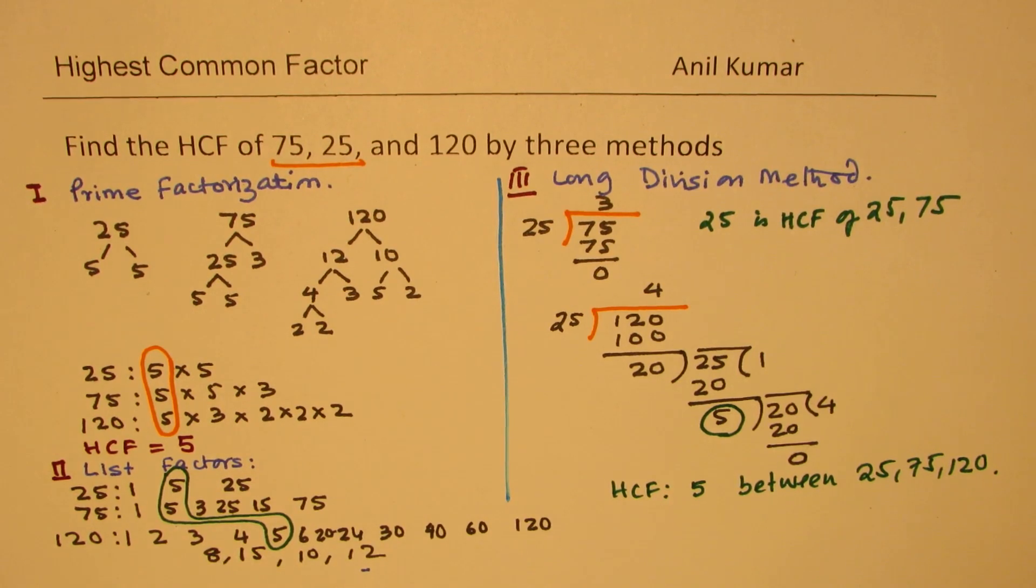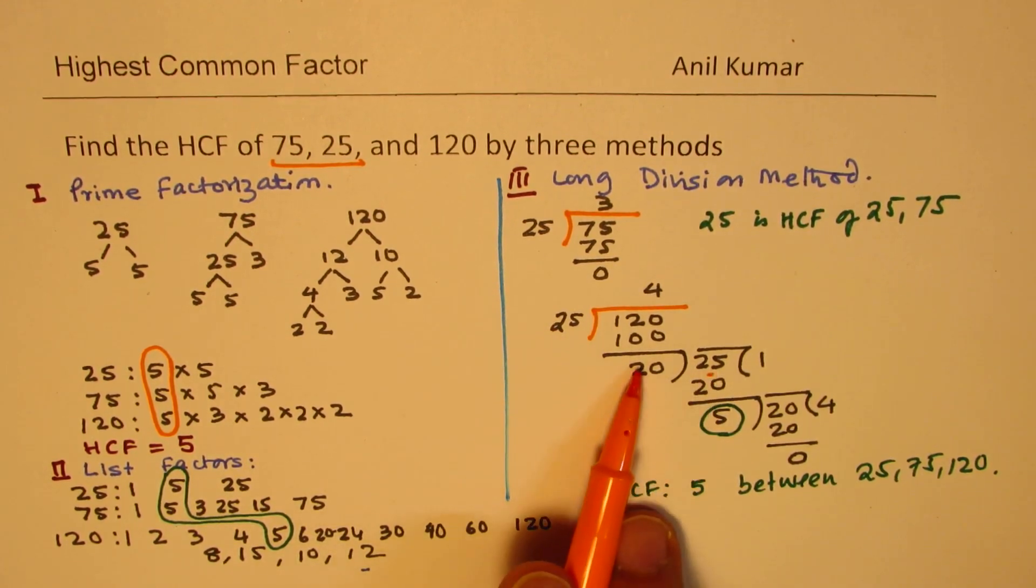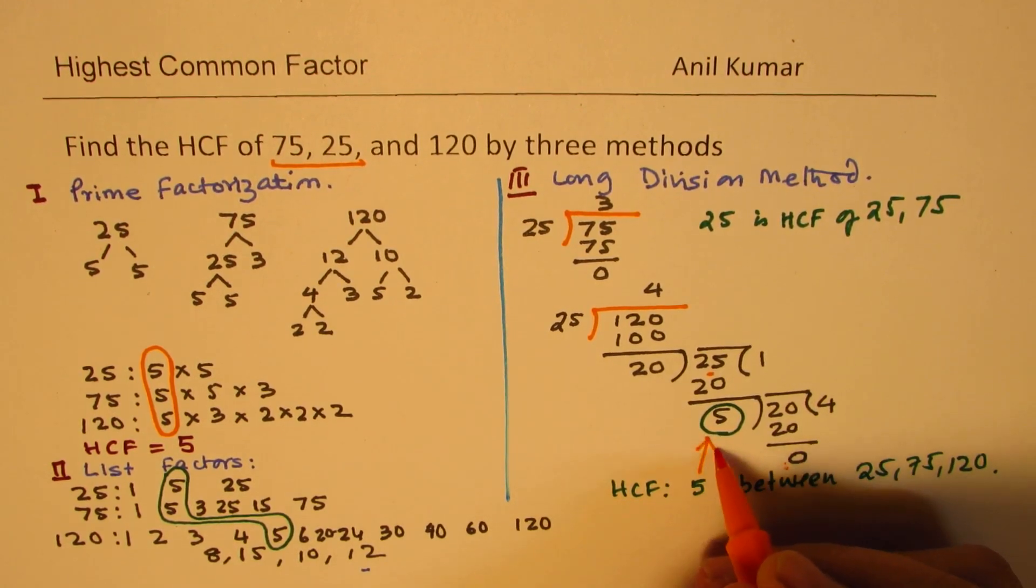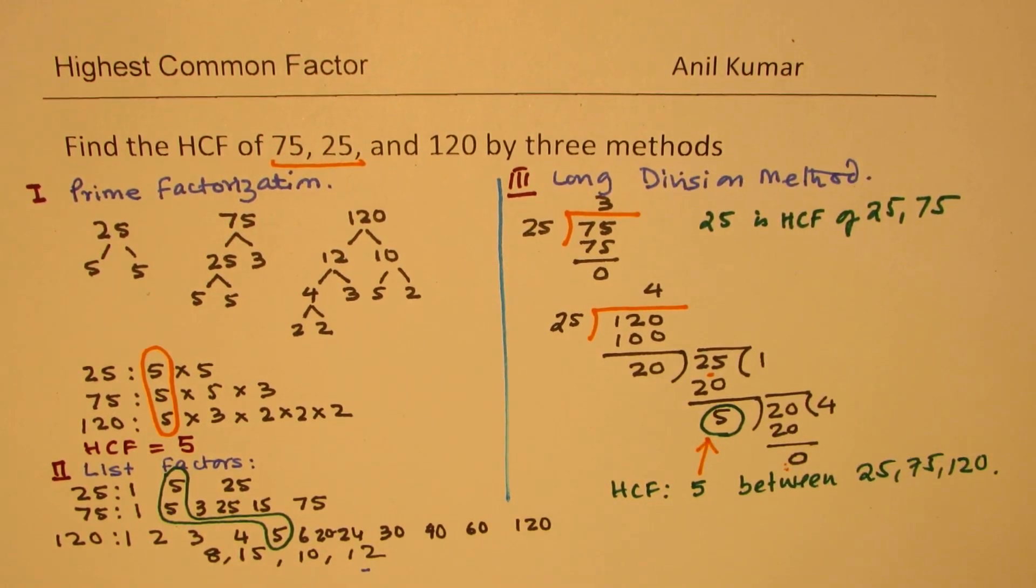So, this process of long division helps you to find the highest common factor by repeated division as shown here. That is the process. You divide by the divisor whatever is the remainder. Use that remainder to divide the divisor and follow this process till you get 0 as your remainder. Now, with 5, 0 was the remainder and therefore, 5 is your HCF. So, that is how we use this long division method to find the highest common factor.